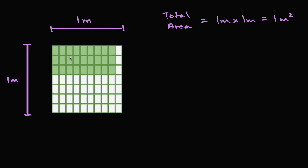Now let's focus on the shaded area. Let's think about what that is. The shaded area is equal to what? I encourage you to pause the video and try to figure that out. Well, one thing that might jump out at you is that our entire square is divided into these equal rectangles. So one way to think about it is: what is the area of each of these equal rectangles? What fraction is that of the whole? To figure that out, we have to figure out how many of these rectangles the whole has been divided into.